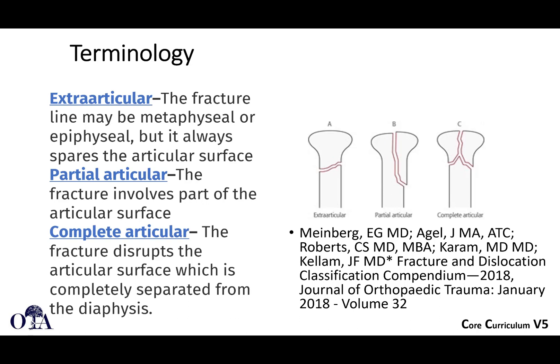Other terms we use: extra-articular means the fracture occurs completely outside of the joint. Partial-articular means part of the joint surface is fractured off, but part of it is still intact. Complete articular, shown on the right, means all of the fragments are separated from the shaft — the entire articular surface is involved.